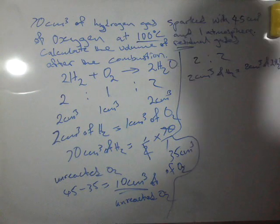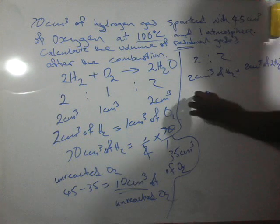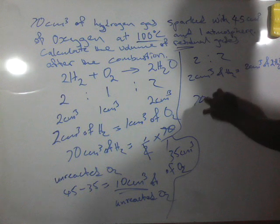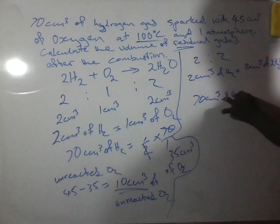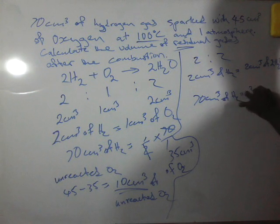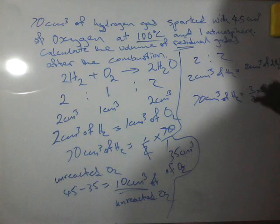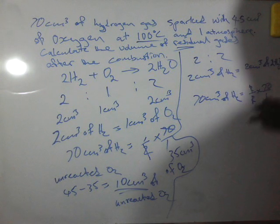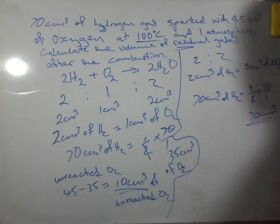So then 70 cm³ of hydrogen will give us 2 times 70 over 2. This will cancel out to have 70 cm³. That's what we have here.